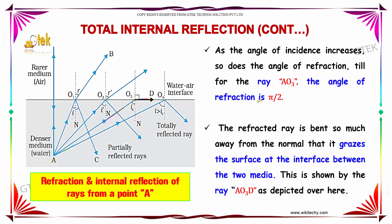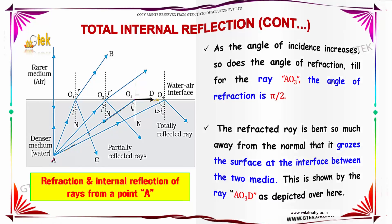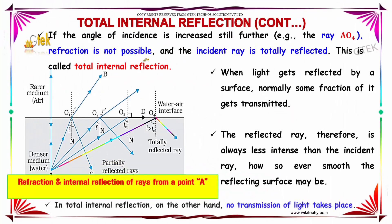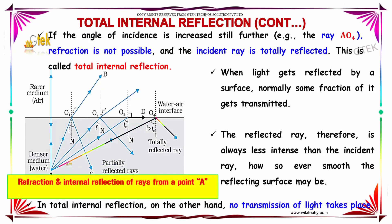At this point, the angle of refraction is 90 degrees, meaning the refracted ray grazes the surface of the interface between the two media, shown by ray A-O3-D. If the angle of incidence is increased still further, as for ray A-O4, there is no refraction and the incident ray is totally reflected. This is called total internal reflection.